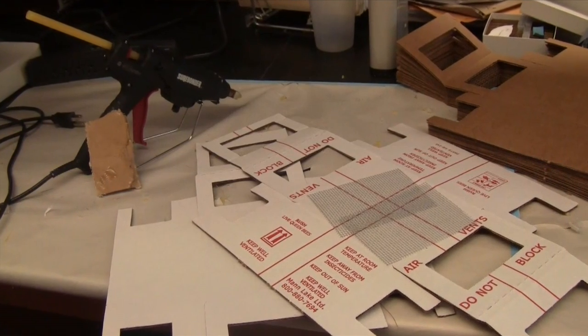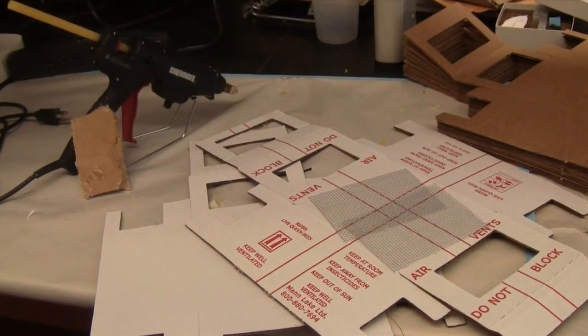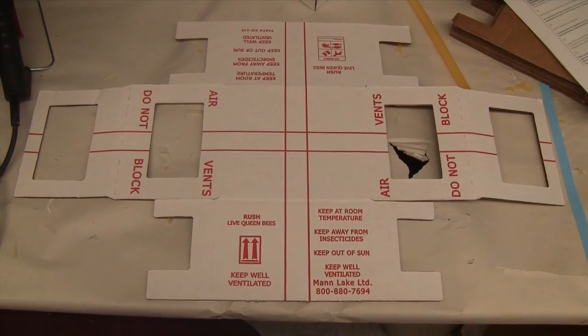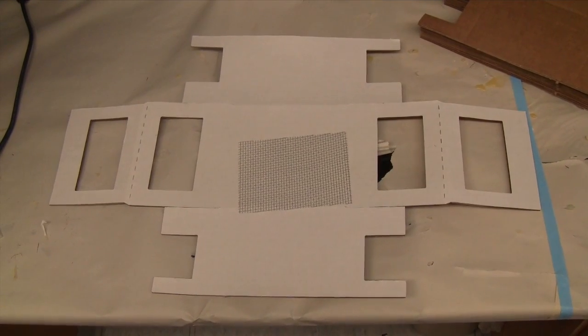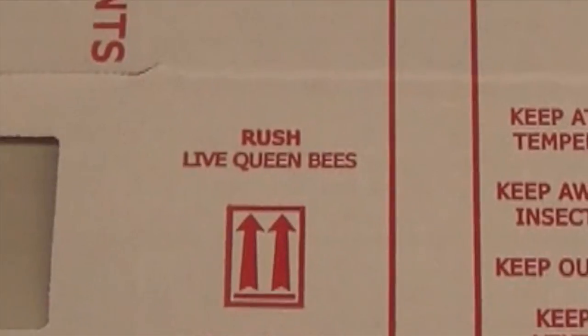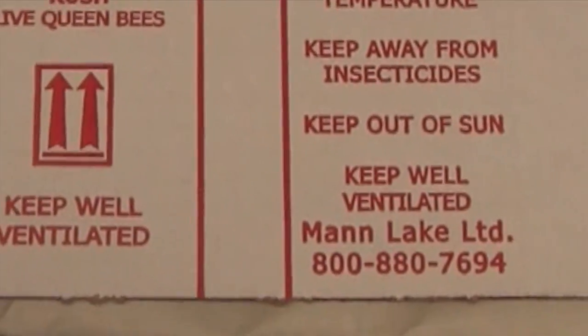In order to construct a live bee shipping box, you will need the following materials: top and bottom box templates with metal screens. These are Queen shipping boxes available from Mann Lake.